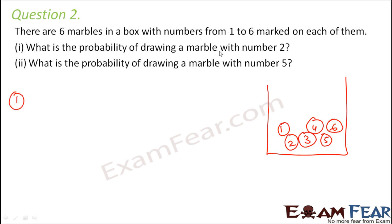What is the probability of drawing a marble with number two? So possibility of getting a number two marble is one and total number of possibilities of getting a marble is six because there are six marbles. There is a possibility you might get a one, a two, a three, four, five, or six. Therefore the possibility of getting two is one by six.